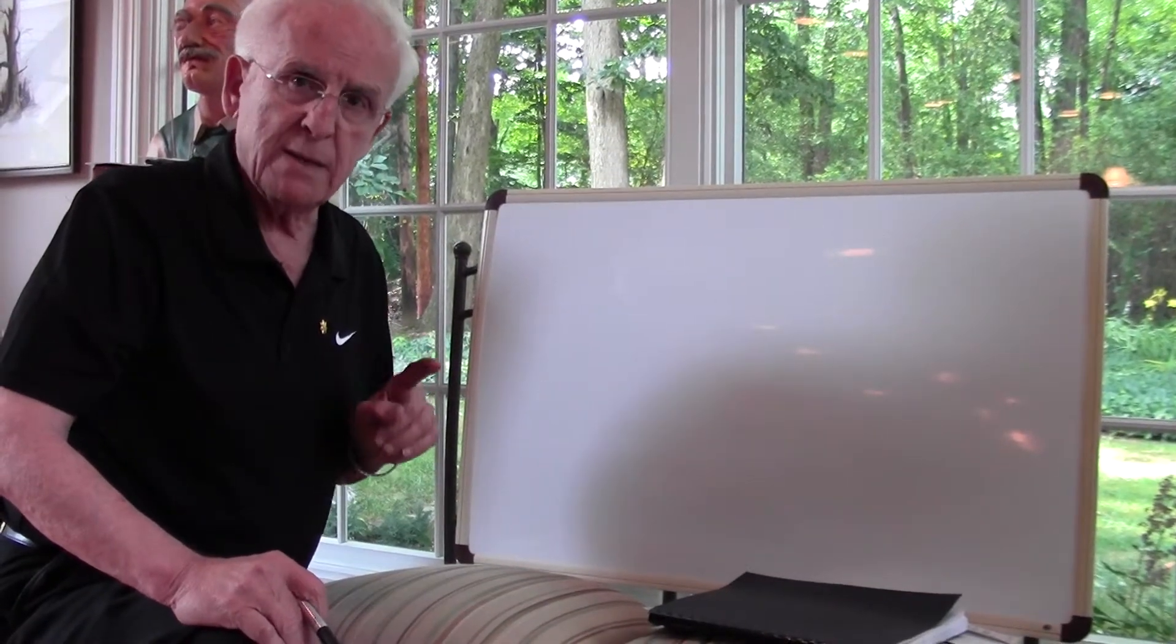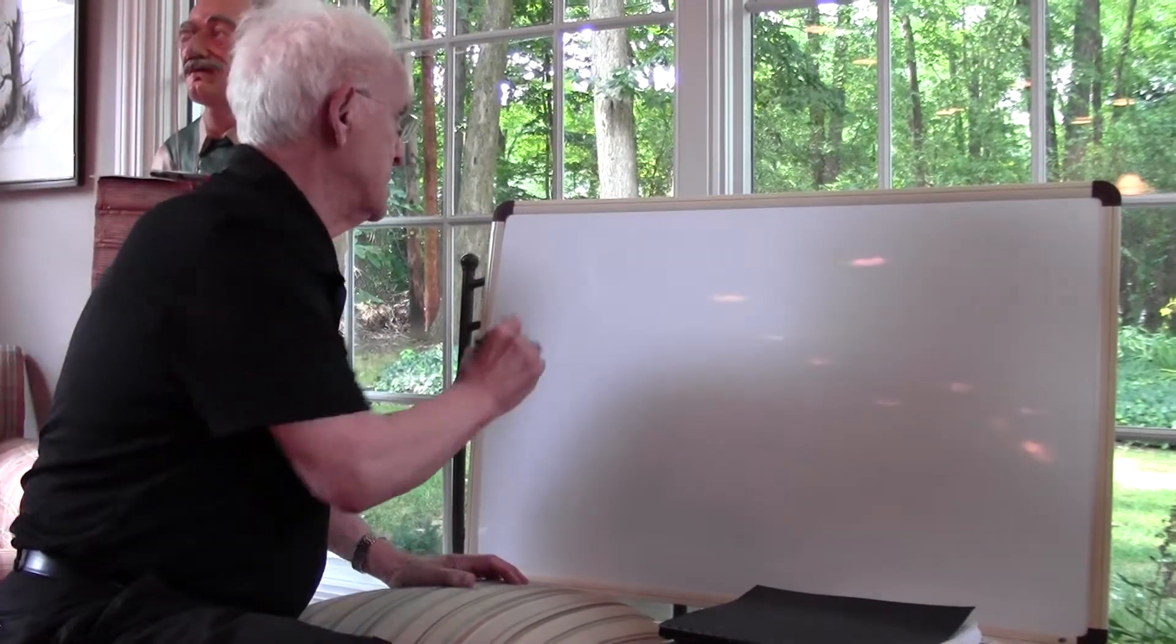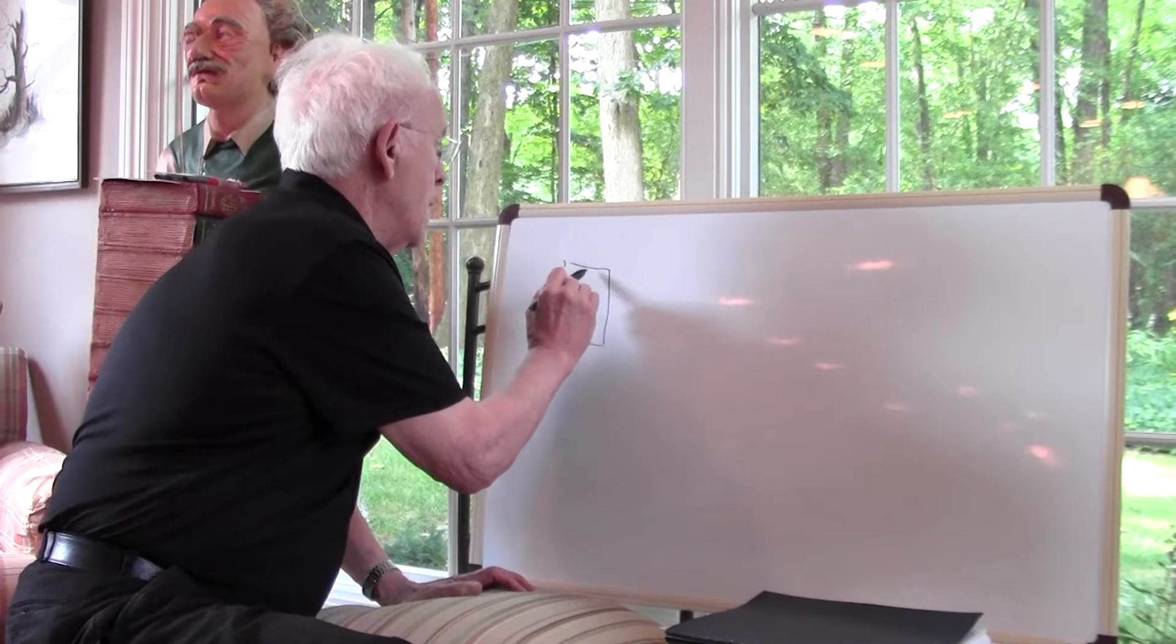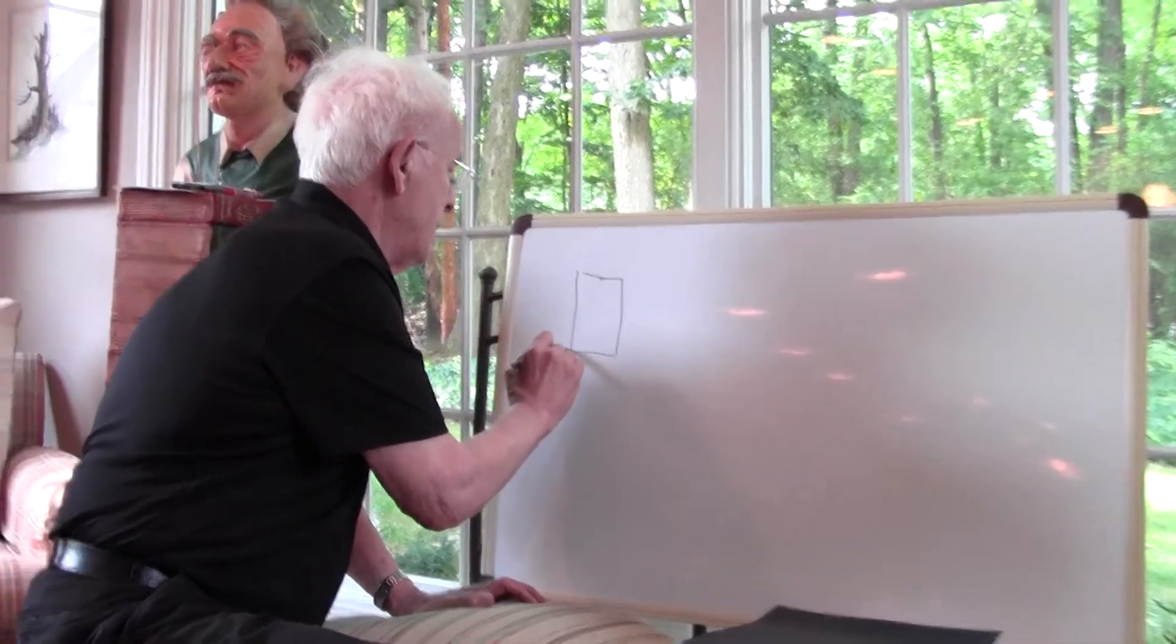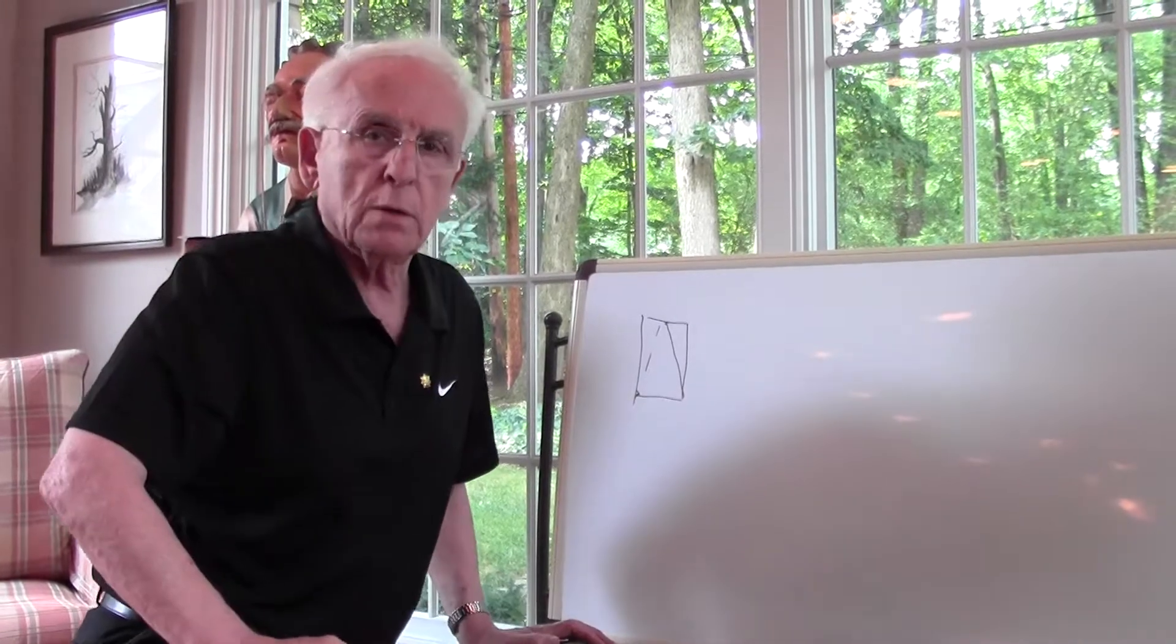I'm going to show you Einstein's time and my time. Einstein has a clock. Up here is a mirror. The beam of light goes up here and back. It's called tick-tock.